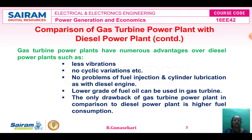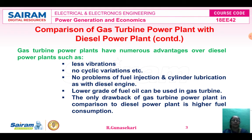The only drawback of the gas turbine power plant compared to the diesel power plant is higher fuel consumption — more consumption for gas turbine, less consumption for diesel power plant. This is the comparison of gas turbine power plant with the diesel power plant. You can now compare these two and write the advantages of gas turbine power plant over diesel power plant.